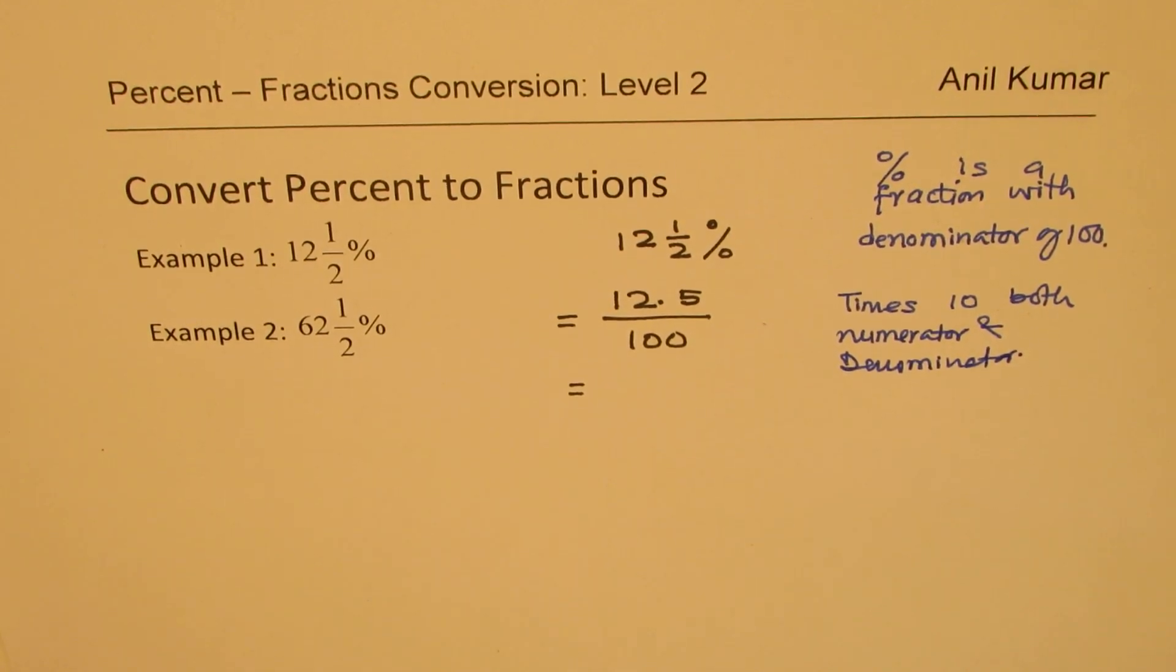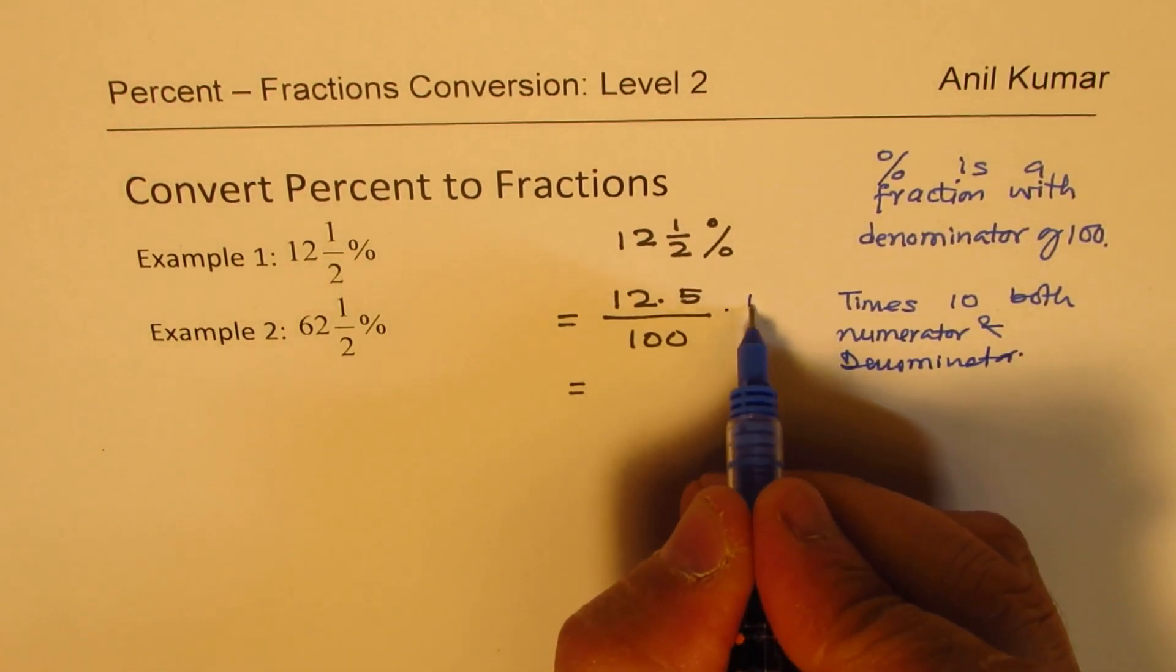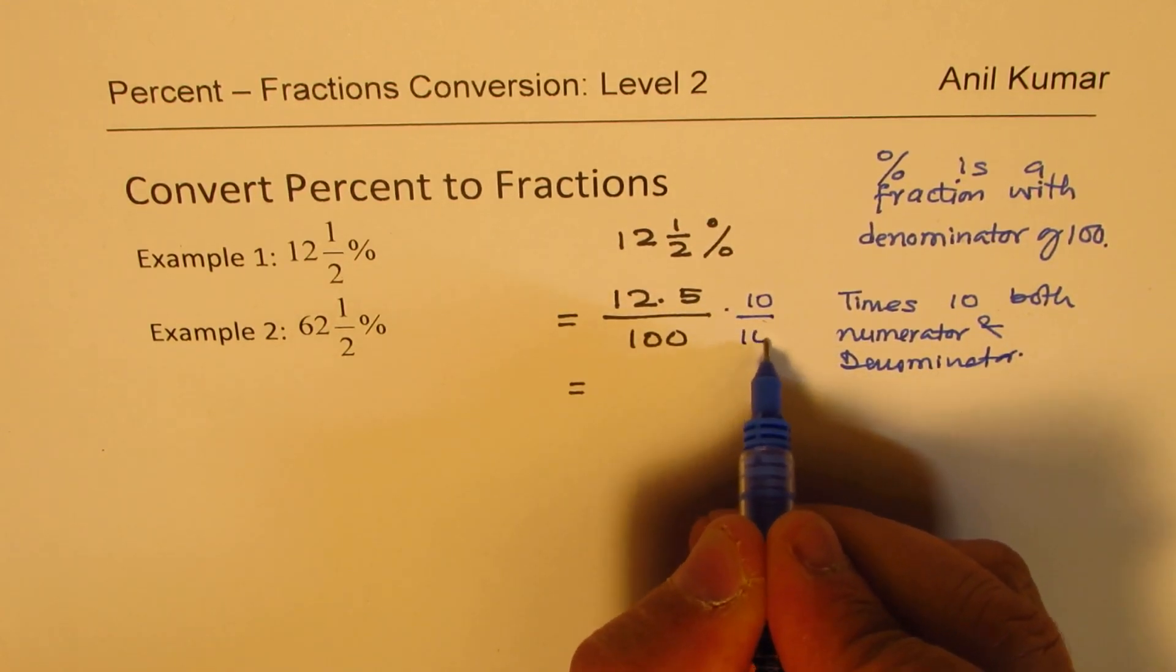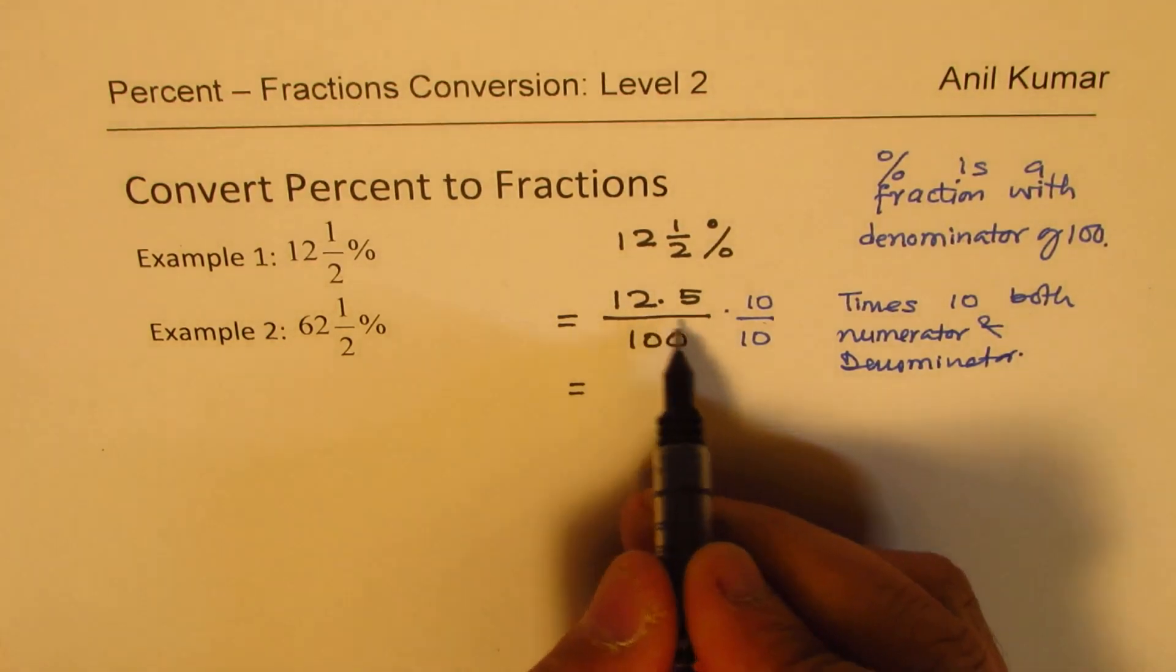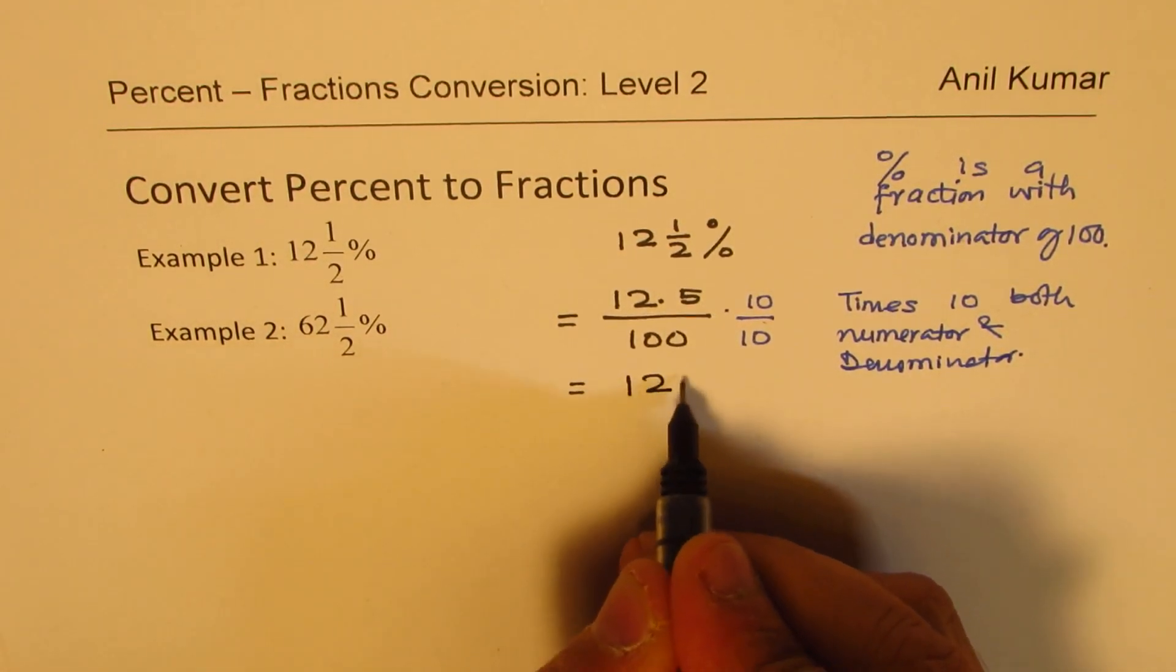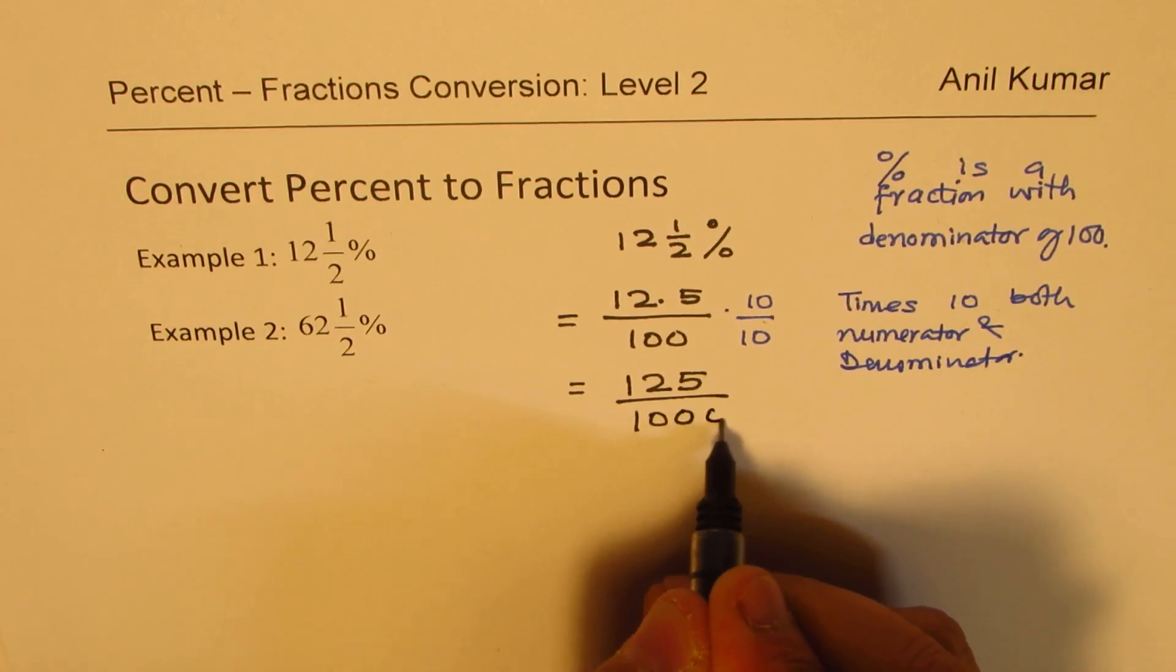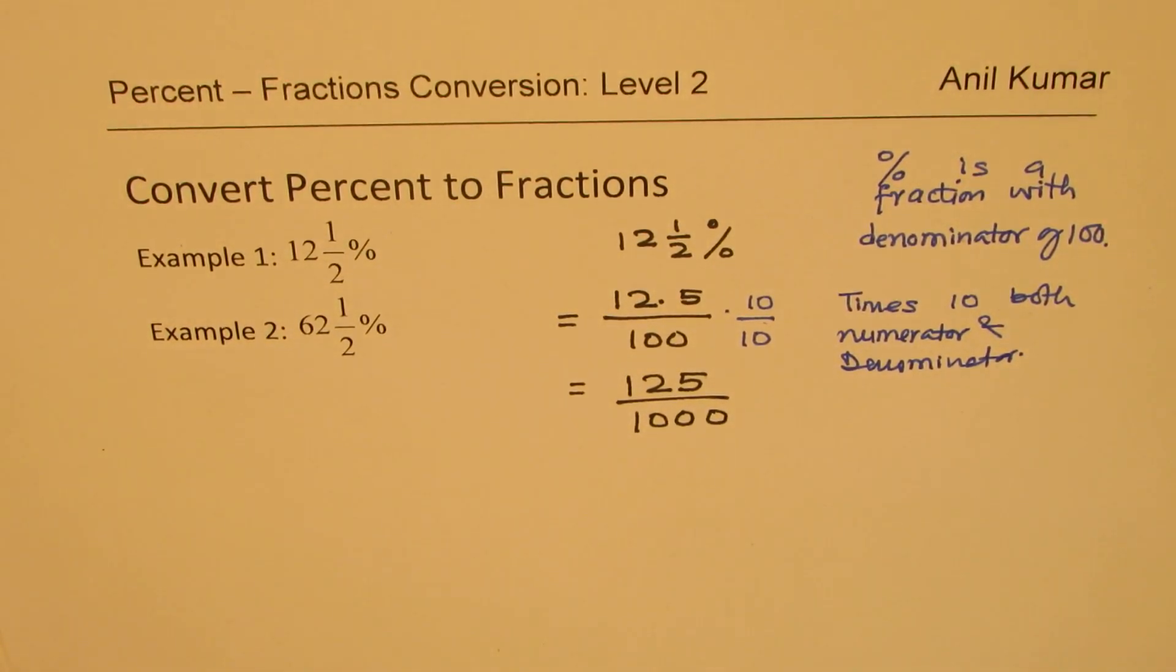So when you times by 10, that is to say, we will multiply both numerator and denominator by 10. That is what I mean. So when you do that, decimal moves to the right and we get 125 in the numerator and we get 1000 in the denominator.